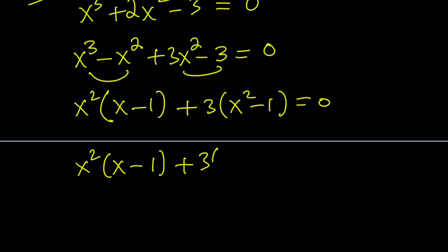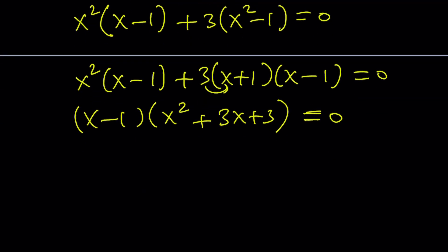Factor difference of 2 squares. And take out x minus 1, and you'll get x squared plus, and you've got to distribute here, 3x plus 3. So we already knew x equals 1 is a solution because we checked it, but from here we get 3 solutions. x equals 1 is one of them.